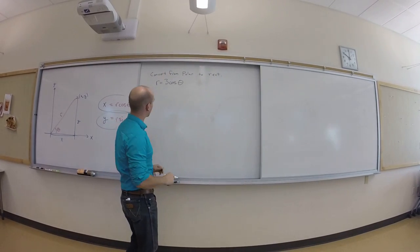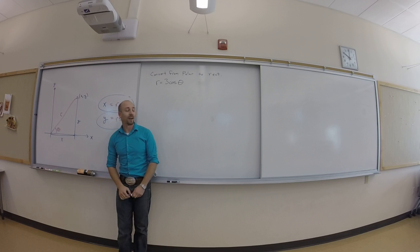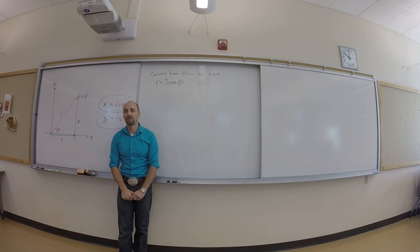All right, so say I wanted to convert from polar to rectangular, and I had r is 3 cosine theta.